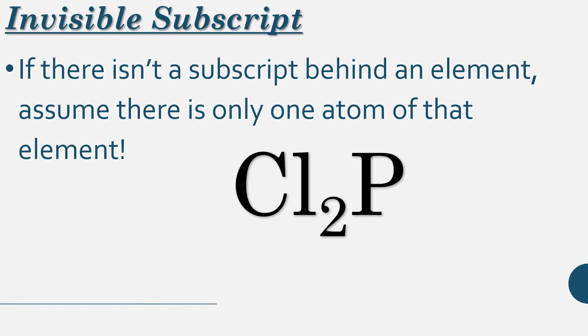So why does it mean that sulfur has a 1? It's because in science, if there isn't a subscript behind the element, we assume that there's only one of those atoms. So for example, here we have chlorine and phosphorus, and so we assume that that is a 1. So we'd have 2 chlorines.